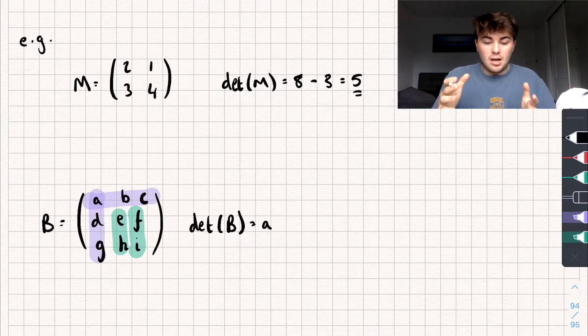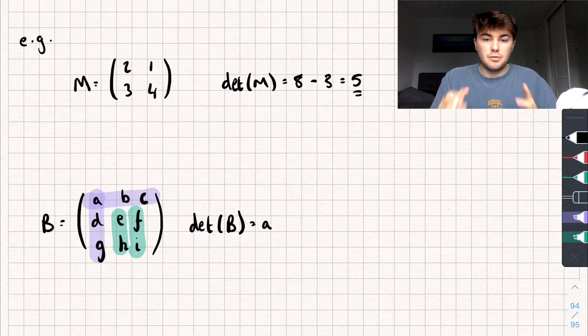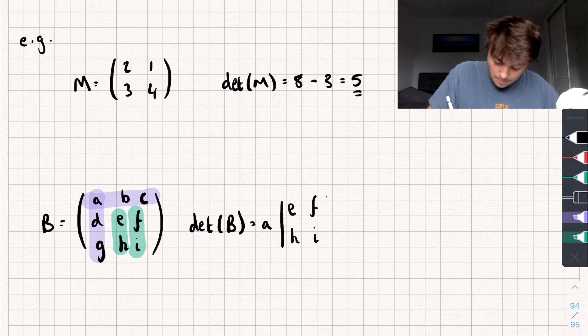And they make up what's called the minor determinant of a. So we find the determinant of e, f, h, i, as if it was a 2x2 matrix.